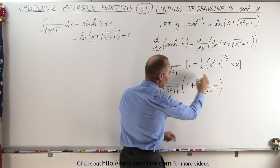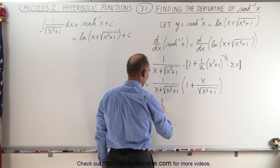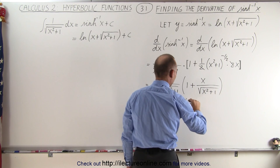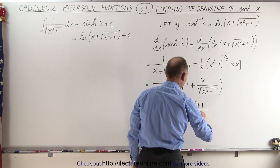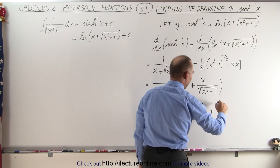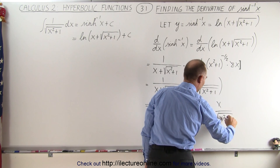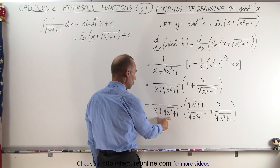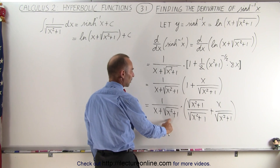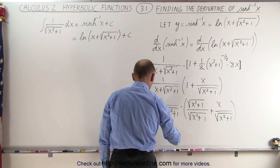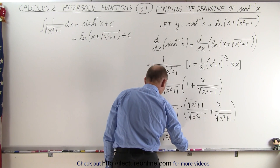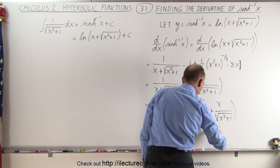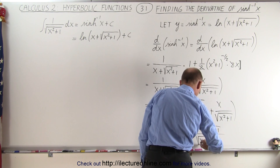Now we're going to take what's in the parentheses and write it over a common denominator to simplify this expression. This becomes 1 over x plus the square root of x squared plus 1, times the square root of x squared plus 1 over the square root of x squared plus 1, plus x over the square root of x squared plus 1. Written over a common denominator, we can reverse the order: x plus the square root of x squared plus 1, all divided by the square root of x squared plus 1.